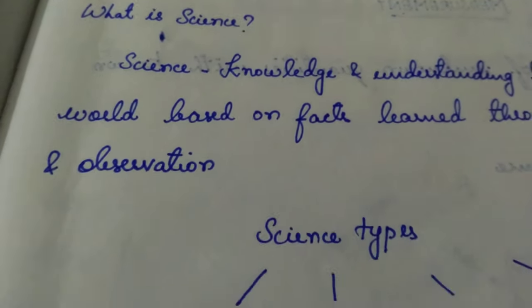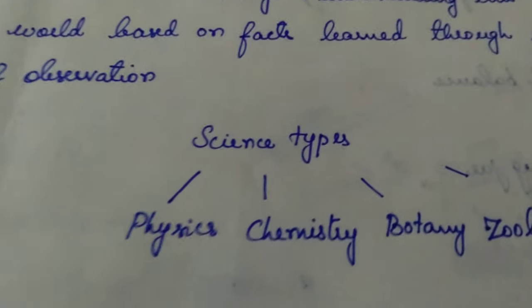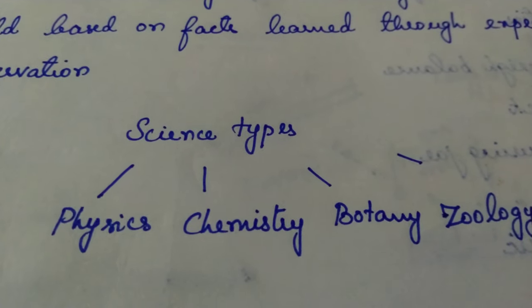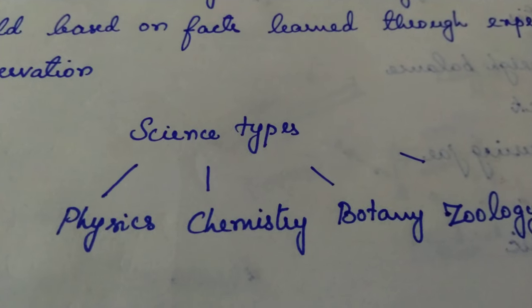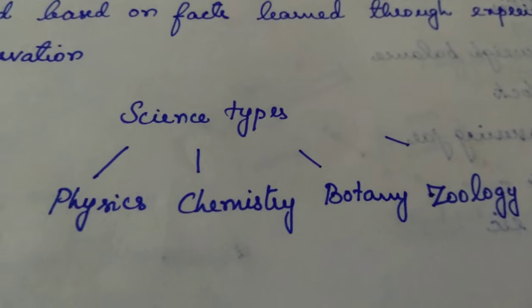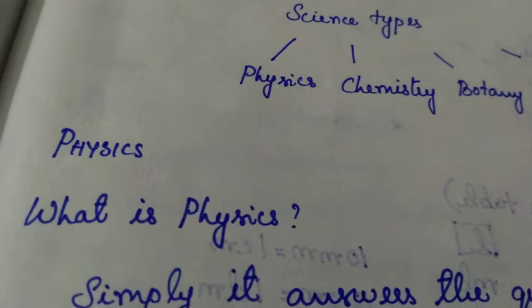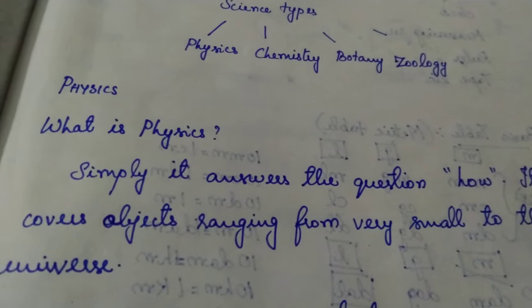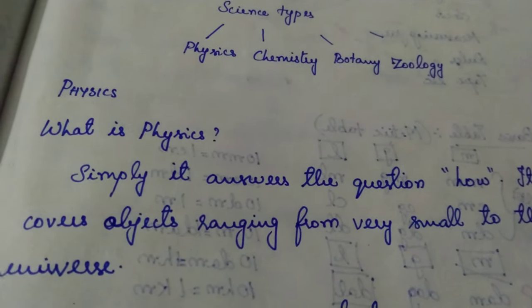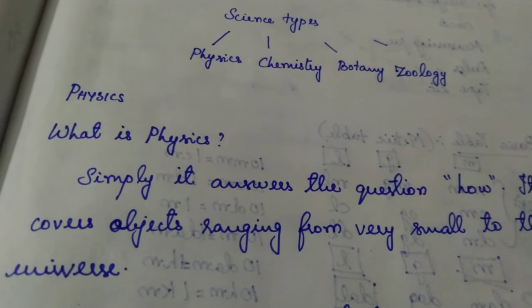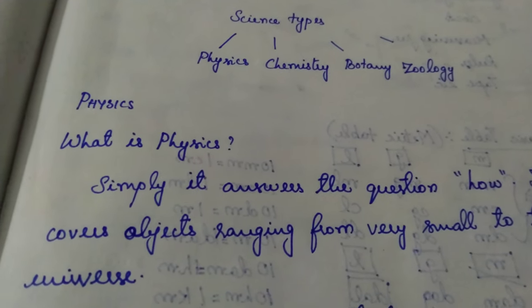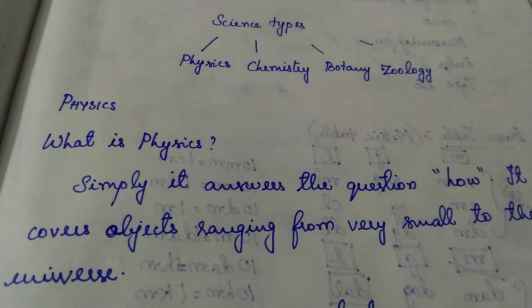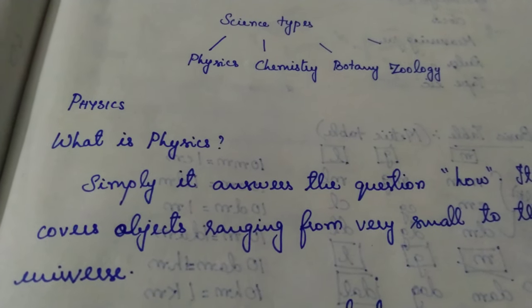Next topic is science types. There are types like life science, physical science and so on. Now we are going to see about physics. What is physics? Simply, it answers the question 'how?' It covers objects ranging from very small to the universe. Everywhere we could see physics.